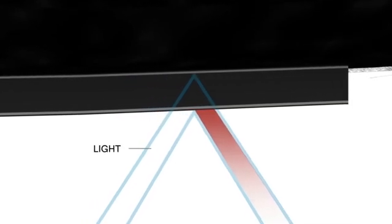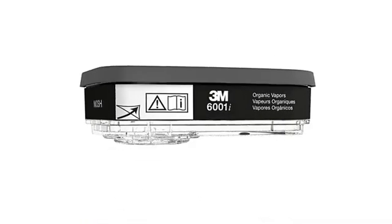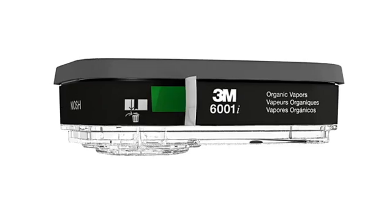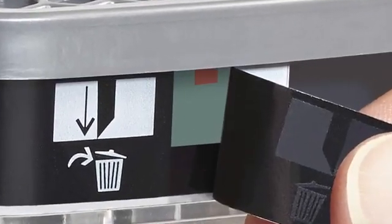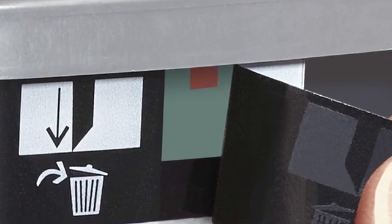In appropriate environments, this will cause a visible change in the ESLI. To read, simply pull back the removable label to reveal the indicator bar, which displays a visual line to help users determine their cartridge service life status.